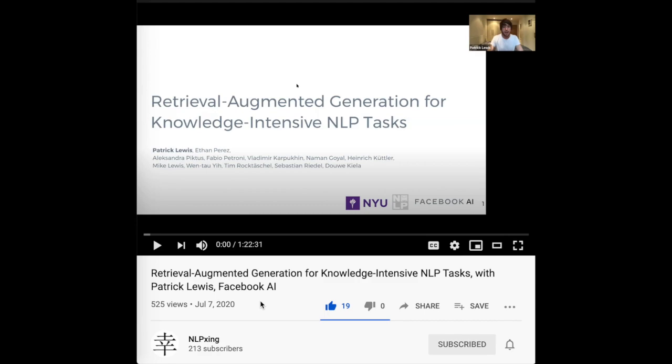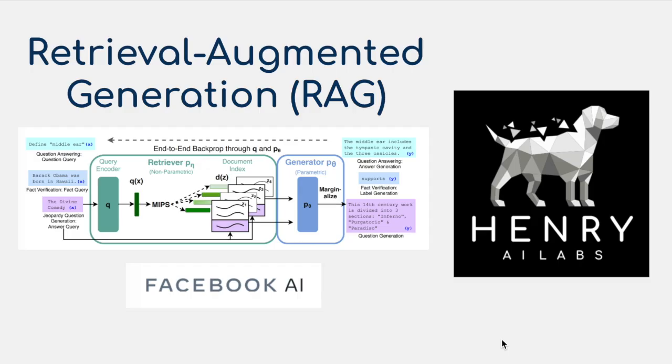For a deeper dive, the presenter highly recommends watching the talk from Patrick Lewis about the paper, linked in the description. Thanks for watching this overview of retrieval augmented generation — hopefully this video made clear the high-level algorithm, how document and query encoding integrate with the pre-trained BART model for context-augmented text generation, and how it adapts to knowledge-intensive tasks. The model is open-sourced in the Hugging Face library, so try it out and share your experience in the comments. Please subscribe to Henry AI Labs for more deep learning and AI videos.